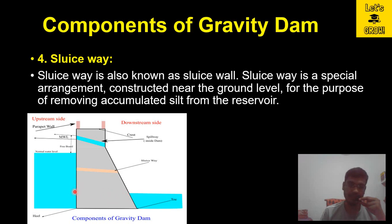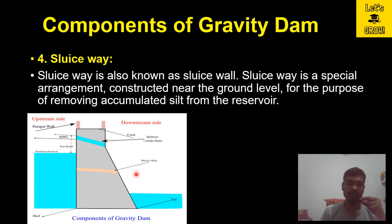The sluiceway is constructed near the ground level, as you can see in this image. It provides a means to simply remove whatever silt or excessive sediment has accumulated in the reservoir.